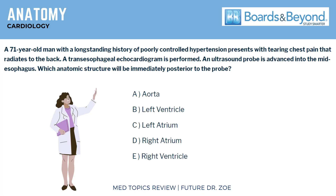Next question, anatomy. A 71-year-old man with a long-standing history of poorly controlled hypertension presents with tearing chest pain that radiates to the back. A transesophageal echocardiogram is performed. An ultrasound probe is advanced into the mid-esophagus. Which anatomic structure will be immediately posterior to the probe? A. Aorta. B. Left ventricle. C. Left atrium. D. Right atrium. E. Right ventricle. The correct answer is A, Aorta.